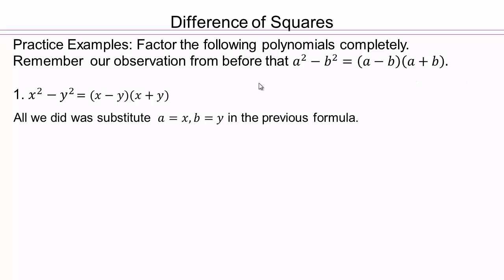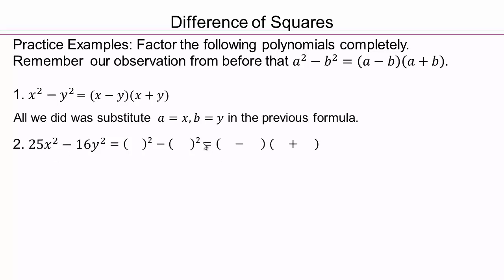The first task is to get the difference of squares to look like something squared minus something squared. Go ahead and do that, and then the factors are going to be whatever goes in the bracket here: that minus whatever goes here, and then that plus that.